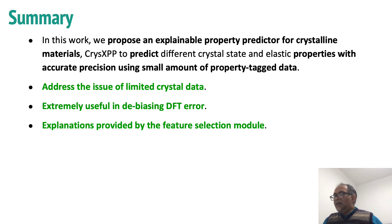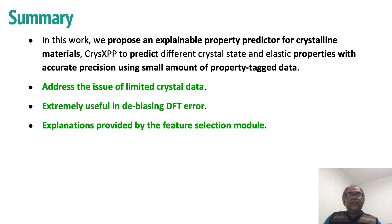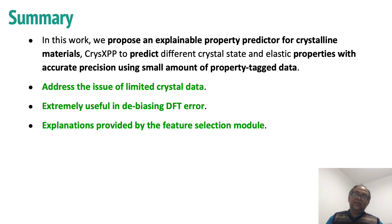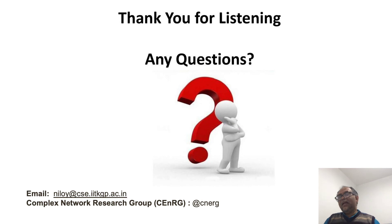In summary, we propose an explainable property predictor for crystalline materials, CRIS-XPP, to predict different crystal state and elastic properties with accurate precision using small amounts of property-tagged data. We addressed the issue of limited crystal data, found that encoder knowledge is extremely useful in debiasing DFT error, and demonstrated through a case study that explanations can be provided to the system.